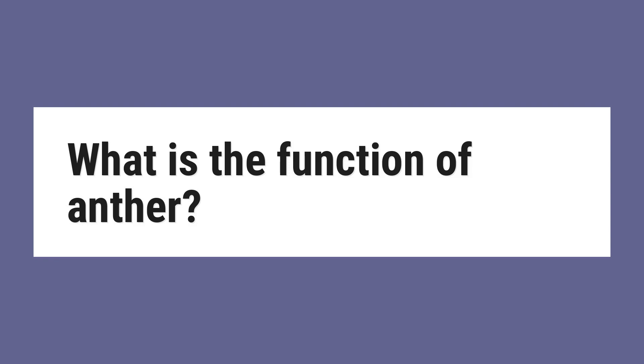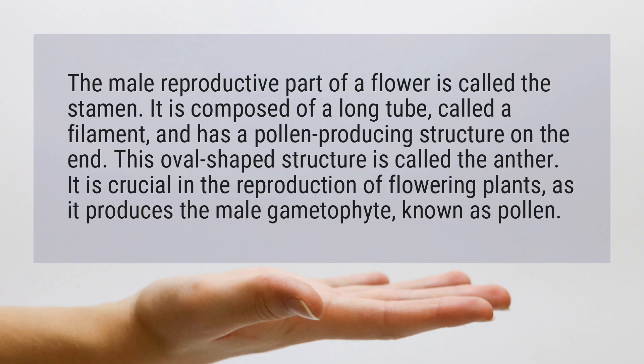What is the function of anther? The male reproductive part of a flower is called the stamen. It is composed of a long tube called a filament, and has a pollen-producing structure on the end. This oval-shaped structure is called the anther. It is crucial in the reproduction of flowering plants, as it produces the male gametophyte, known as pollen.